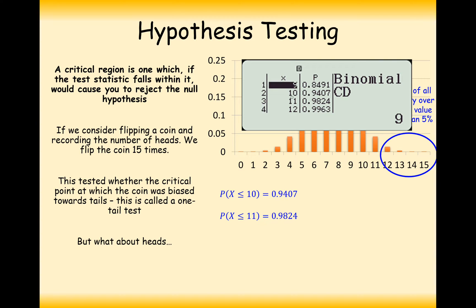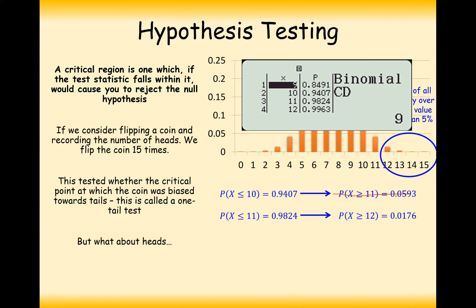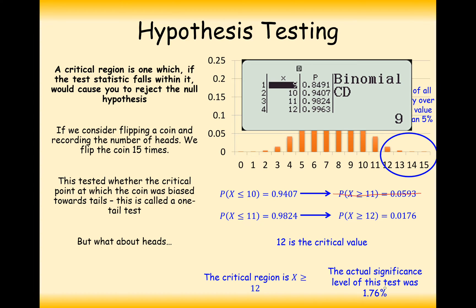The key values from the calculator: the probability of X less than or equal to 10 is just over 94%, and the probability of X less than or equal to 11 is 0.98, so 98%. Because we're working at the upper end and want the probability of a certain number of successes or more, we flip it round. So 1 minus 0.98 gives the probability of 11 successes or more being 0.0593 — that's more than 5%, so it's not 11. The probability of 12 or more is less than 5%, it's 1.76%, so 12 is the critical value, and the critical region is X greater than or equal to 12. The actual level of significance of this test is 1.76%.